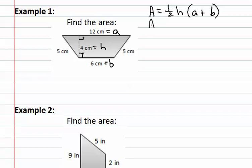We can now fill in our formula, and we have area equals one-half the height, which is four, times a, which is twelve, plus b, which is six.